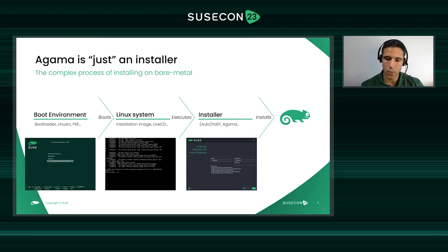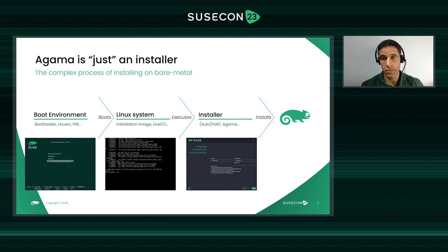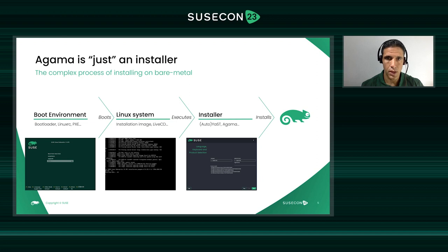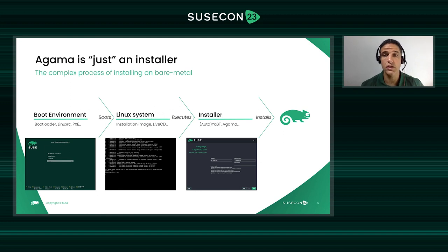Those components are still under technical discussion. To allow you to test Agama, the YaST team has built a live demo — basically an openSUSE Tumbleweed system that runs Agama and opens a browser full-screen to access the Agama web UI. The experience is far from what you'd expect from an installation image because it's not an installation medium; it's just a vehicle for everyone to take a look at Agama.